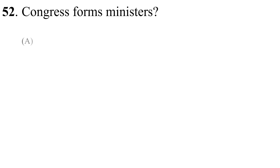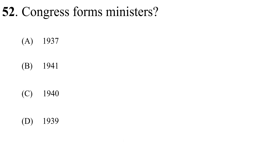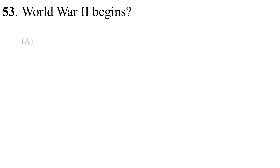Question number fifty-one: Provincial autonomy. Question number fifty-two: Congress forms ministries. Question number fifty-three: World War 2 begins.